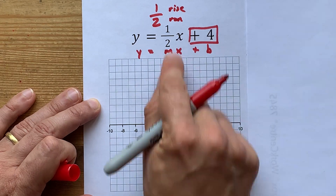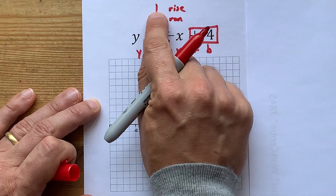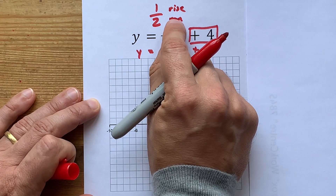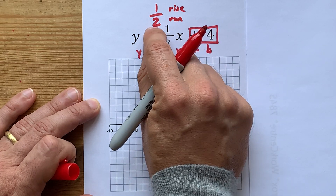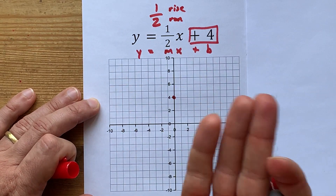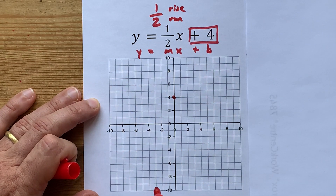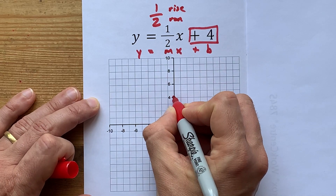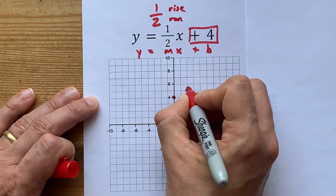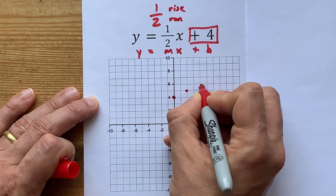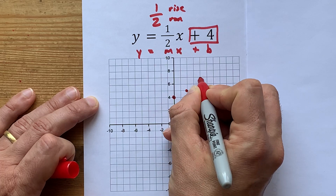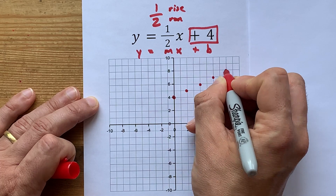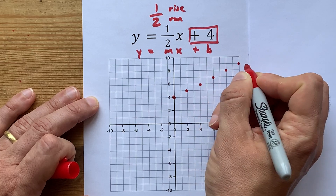So from this point, I want you to rise 1 — that means go up 1 — and run 2, which means going to the right by 2. From this point, go up 1, right 2. Repeat that: up 1, right 2, several times — all these points lie on a line, because it's the equation of a line.